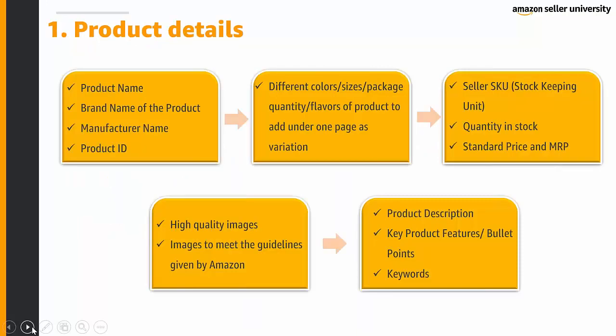Starting off with product details, make sure to have the product name, the brand name of the product, manufacturer name, and the product ID. Different colors, sizes, packaging quantity, or flavors of the product should be added under one single page as a variation. Make sure to update the seller SKU (stock keeping unit), quantity in stock (your inventory), standard price, and the MRP.